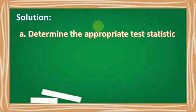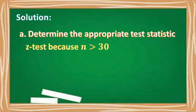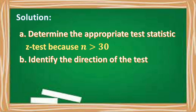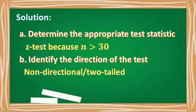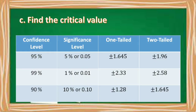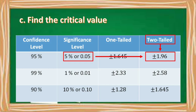A: Determine the appropriate test statistic. The test statistic is a Z-test because our n is greater than 30. B: Identify the direction of the test — it is non-directional or two-tailed. C: Find the critical value using the table. We have a significance level of 0.05 and a two-tailed test. Therefore, our critical value is plus or minus 1.96.